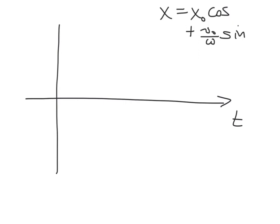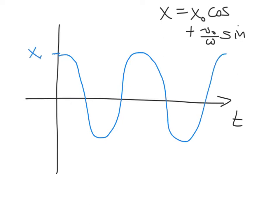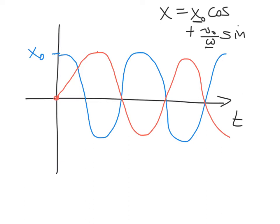Let's inspect this solution. We have x(t) = x₀·cos(ωt) + (v₀/ω)·sin(ωt). The x₀·cosine term starts at x₀ at t=0 and oscillates. The sine term oscillates in the opposite direction, having a value of zero at t=0 and then reaching a maximum a bit later. The full solution is a combination of these two curves, and we can satisfy both the initial displacement and velocity conditions by adding those two solutions together.